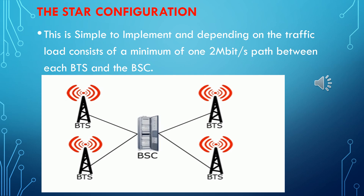The first method is the star configuration. Under star configuration it is simple to implement and, depending on the traffic load, consists of a minimum of one two-megabits-per-second path between each BTS and the BSC. From the BSC to each BTS there is a two-megabits-per-second transmission medium — the E1. That's one E1 connectivity per BTS.